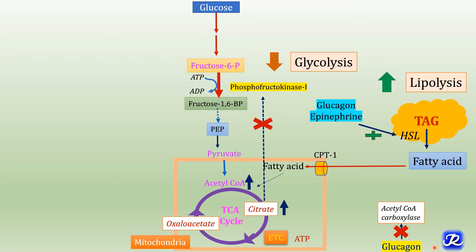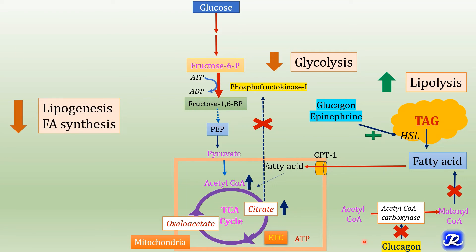Glucagon also inhibits acetyl-CoA carboxylase, the rate-limiting enzyme in fatty acid synthesis, which converts acetyl-CoA to malonyl-CoA for further fatty acid synthesis. Therefore, glucagon inhibits fatty acid synthesis and lipogenesis, that is formation of triacylglycerol. So in fasting and starvation there is increased lipolysis and decreased lipogenesis.